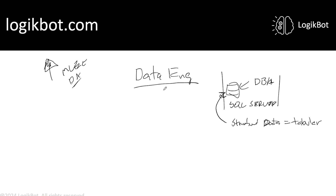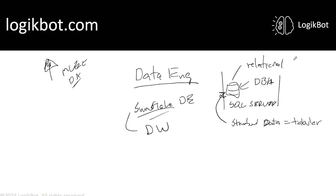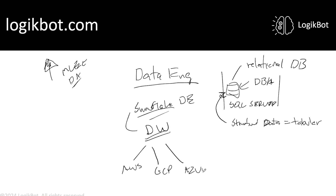One data engineering role that I like is called the Snowflake data engineer. What is Snowflake? It is a data warehouse. Remember — there's a relational database over here, and this is a data warehouse. This Snowflake data warehouse works on the big three: AWS, GCP (Google's cloud platform), and Azure. And it's a cloud data warehouse.